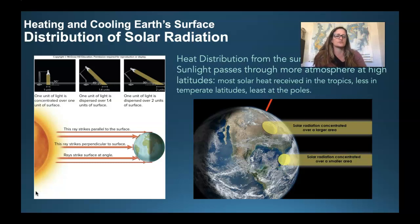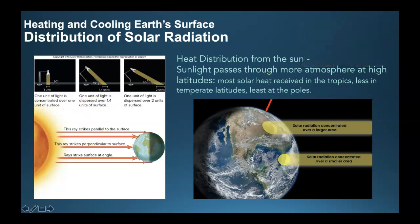There is a distribution of solar radiation that we need to talk about. Heat distribution from the Sun: sunlight passes through more atmosphere at high latitudes. Most solar heat is received in the tropics and less in the temperate latitudes and even less at the poles.